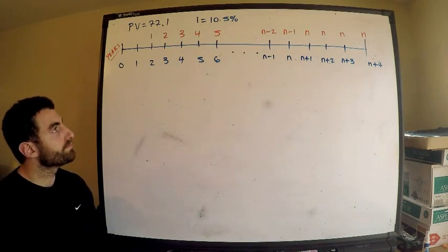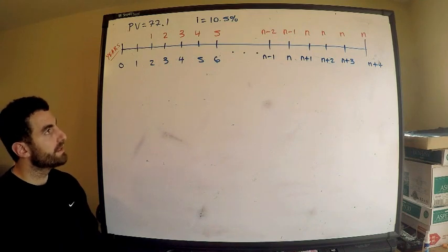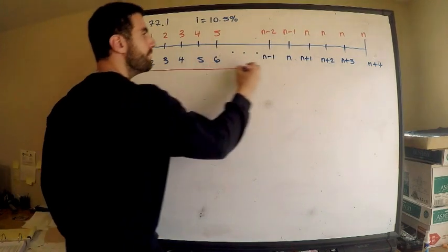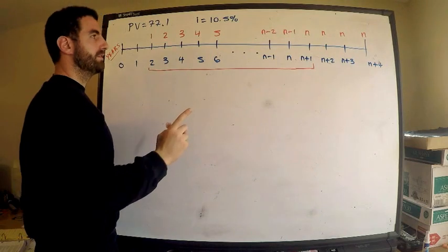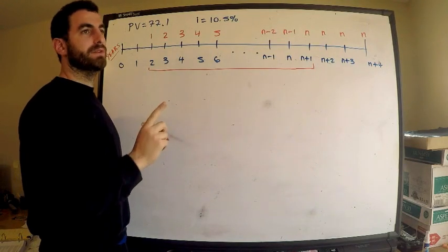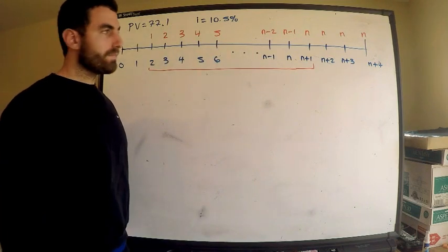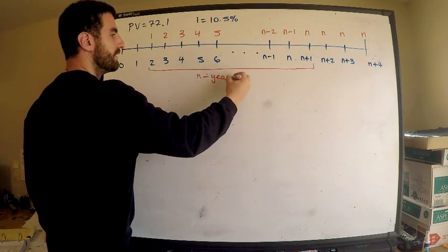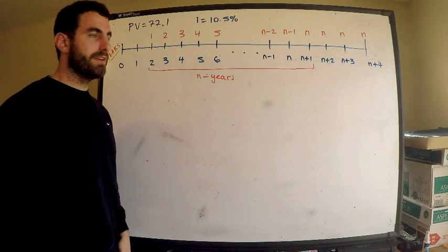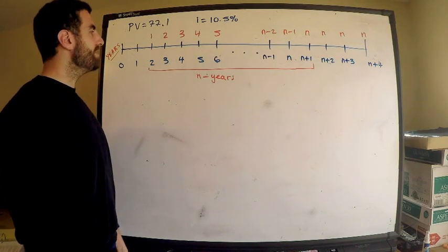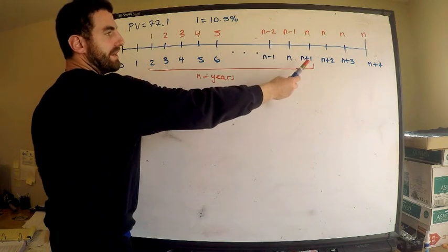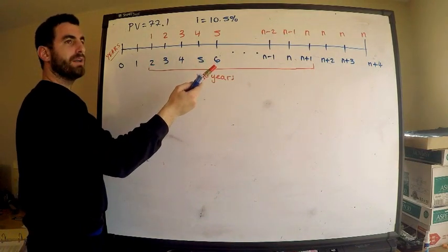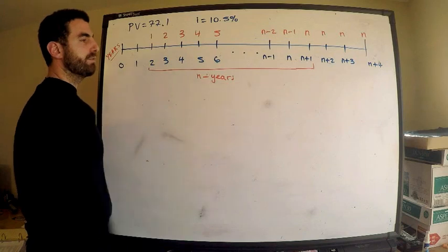Now, how are we going to compute this? From time two all the way to n plus one, I'm going to treat that as one piece — this is an increasing annuity where payments go up by one. There are n periods here. To count: take the final mark n plus one, subtract the starting point before two, and n plus one minus one equals n. That's why there are n years.